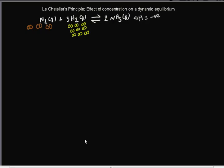Welcome back. We're trying to understand what Le Chatelier's principle means and also the effect of concentration on a dynamic equilibrium. This is what Le Chatelier stated: when you apply an external stress to a dynamic equilibrium, the equilibrium will shift in a direction to offset, to reduce that stress. For example, if I'm increasing the stress on the left-hand side, the equilibrium will shift to the right to minimize or offset that stress.